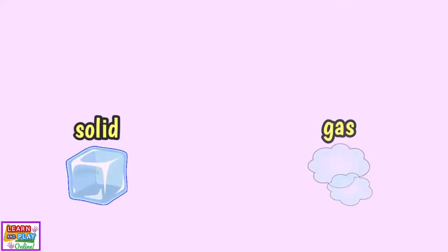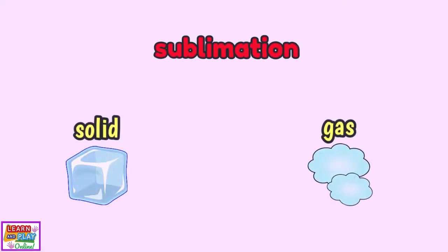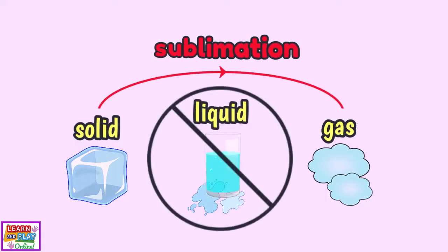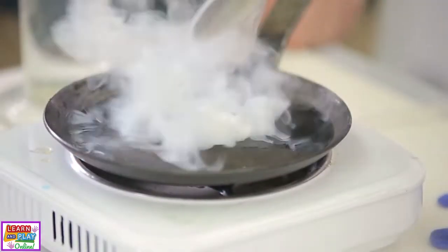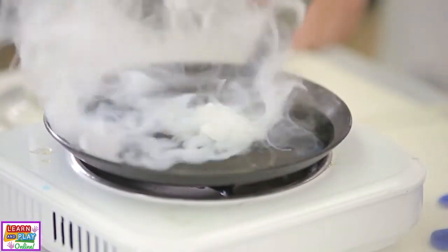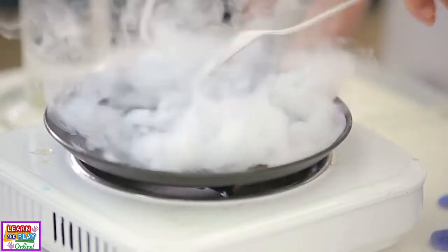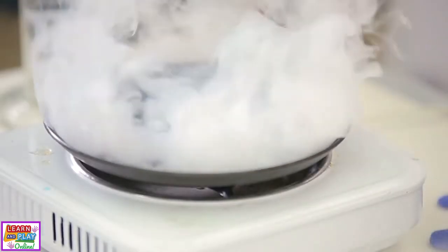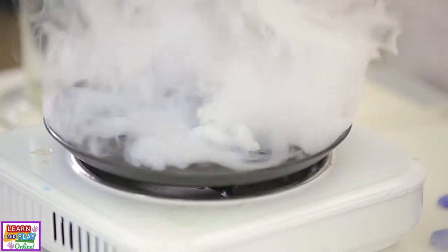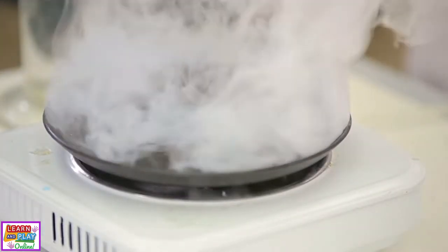Now let's move on to another change in state of matter: sublimation. Sublimation is when solid matter turns straight into gas matter, skipping the liquid state altogether. An example of this is when heat is added to dry ice, which is a solid. When heat is added to dry ice, it completely skips the liquid state as it turns straight into gas matter.